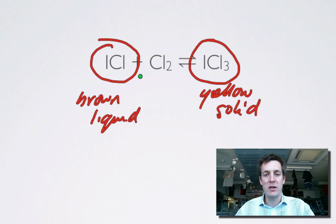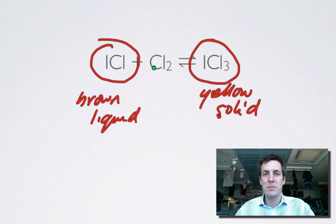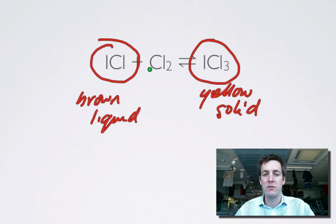Now bringing in collision theory — why does the forward reaction speed up when we add chlorine? There will be a higher concentration of chlorine, so more particles in a given space, giving a greater chance of collisions. So the rate of the forward reaction increases, which is why it goes faster than the backward one and we produce more solid. If we remove chlorine, it slows down the forward reaction because there are fewer particles in a given space, so the chance of collisions is smaller. This makes it seem as though the backward reaction is going faster — and it is, relative to the forward one — but not because the backward reaction sped up, but because the forward reaction slowed down.